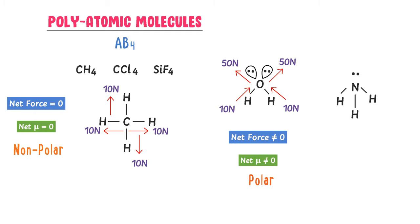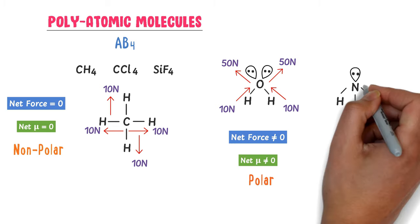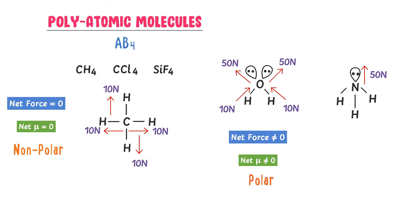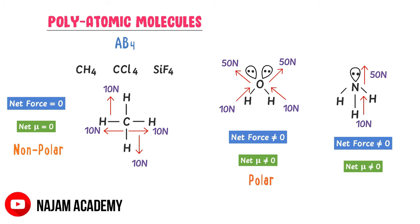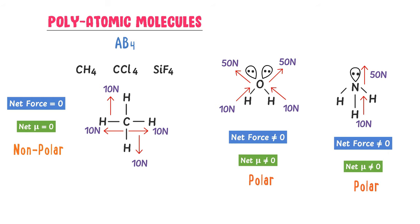In the case of NH₃, there is one lone pair present on the central nitrogen atom, which exerts a 50N force in its direction. Nitrogen is more electronegative, so it exerts a 10N force in its direction as well. The net force is not equal to zero and the net dipole moment is not equal to zero. Hence, ammonia is a polar molecule. By this method, we can find the dipole moment of any molecule.